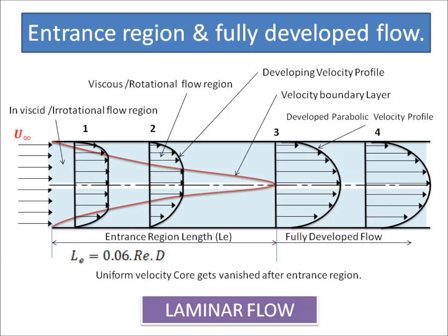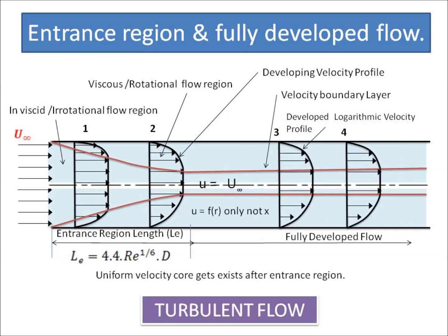The velocity profile does not change in the direction of flow and remains constant — it is parabolic in nature for laminar flow. Look at the velocity profiles at sections 3 and 4; they are constant in the flow direction. The entrance region length for laminar flow is given by 0.006 × Reynolds number × diameter of pipe. For turbulent flow, a central core where velocity is constant still exists. The entrance region length for turbulent flow is a function of Reynolds number, diameter, and surface roughness. The velocity profile is logarithmic in nature for turbulent flow, and the entrance length for turbulent flow is less than for laminar flow.